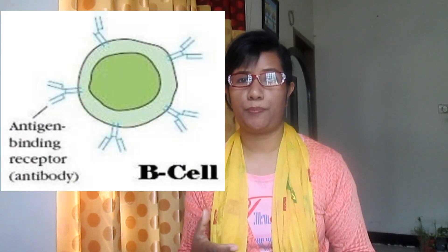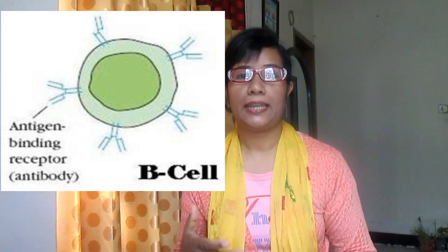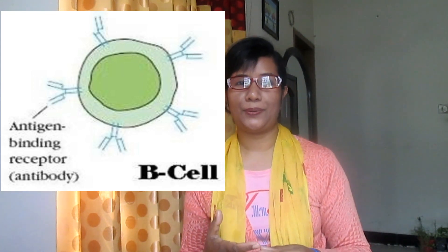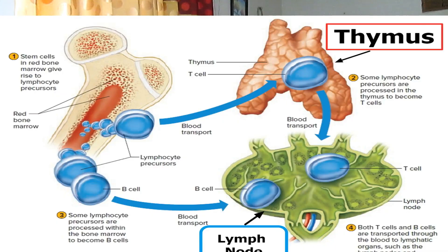Each type is specialized to respond to one antigen, giving the immune system as a whole the ability to respond to almost any type of pathogen that enters the body. Immune responses depend on B and T cells interacting with each other to give an effective defense.